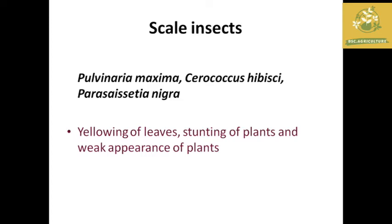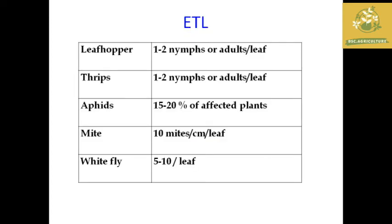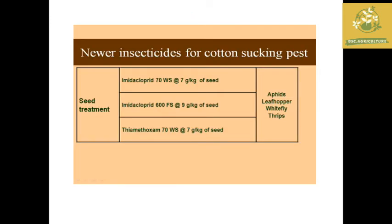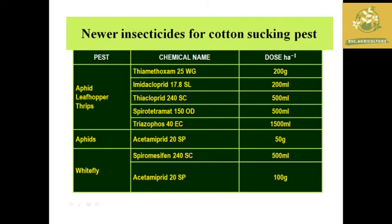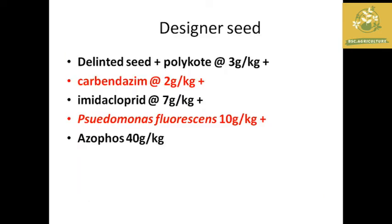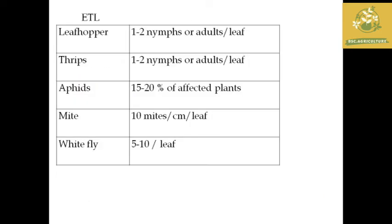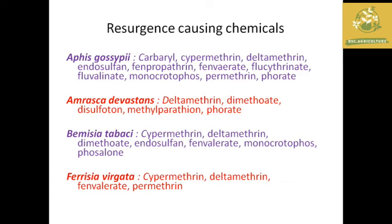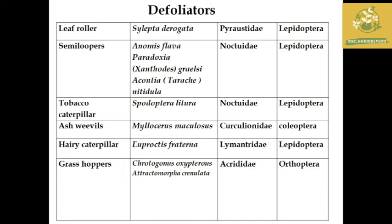The next pest is scale insects. The major symptoms include yellowing of leaves, stunting of plants and weak appearance. Economic threshold levels for sucking insects are provided in the table, along with new insecticides for cotton sucking pests with seed treatment options. Resurgence-causing chemicals must be taken into consideration when planning sprays. Now we move on to defoliators.